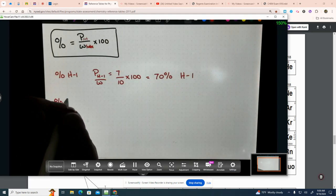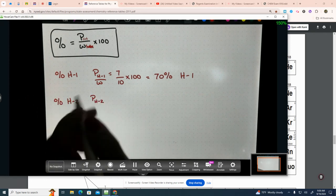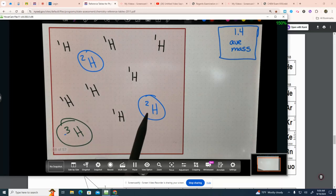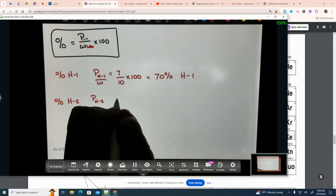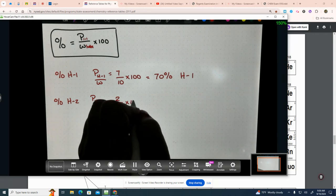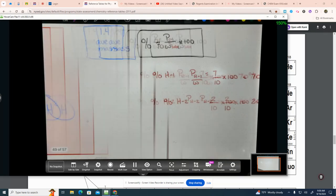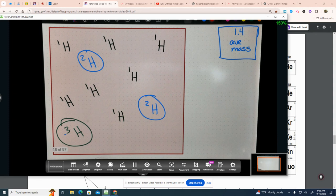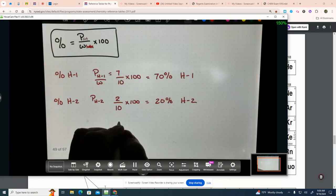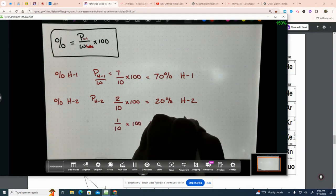Now, let's find the percent that is H-2. The percent that's H-2 is going to be, how many did I make? Two, right? So, two, the whole thing didn't change. It's still 10 times 100. That's going to give me 20% H-2. How much H-3 do I have? One out of 10 times 100 is going to give me 10% of H-3.